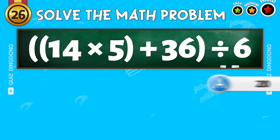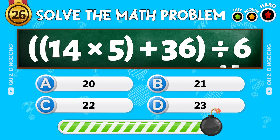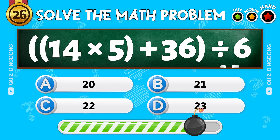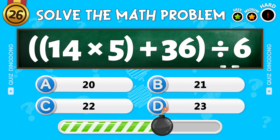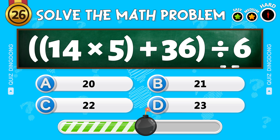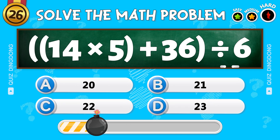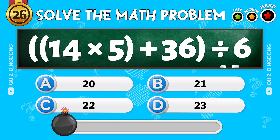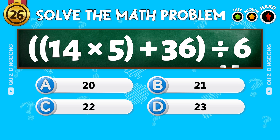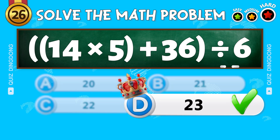Solve this! What's 14 times 5 plus 36 divided by 6? Spot on! That's 23!